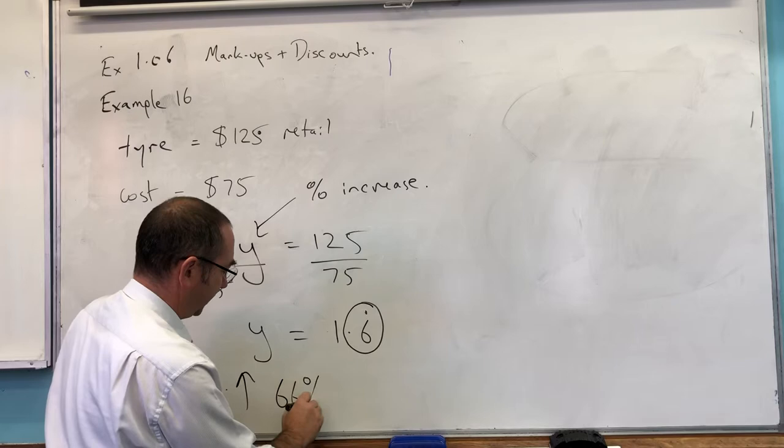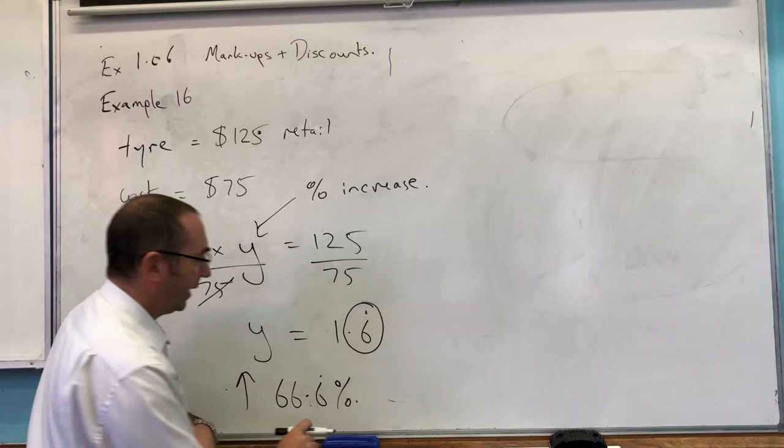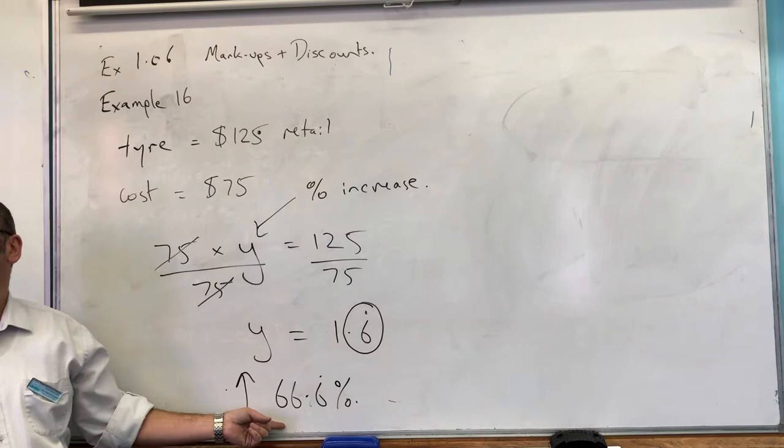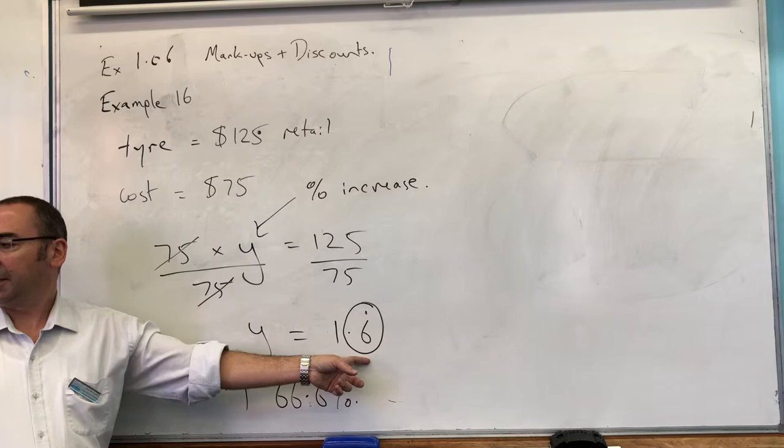Probably better to say absolutely accurate 66.6 recurring percent. And what did I do there? I converted a decimal back into a percentage. Because 0.6 recurring as a percentage, like if you multiply it by 100, it'd come out at 66.6.